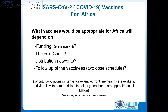What vaccine would be appropriate for Africa will depend on funding costs, the cold chain — ensuring that the standard cold chain for COVID vaccines does not disrupt ongoing childhood vaccination — and distribution networks, as well as follow-up of vaccinees. Most of these vaccines come in two doses, which adds complexity.